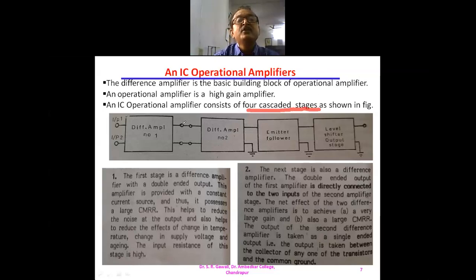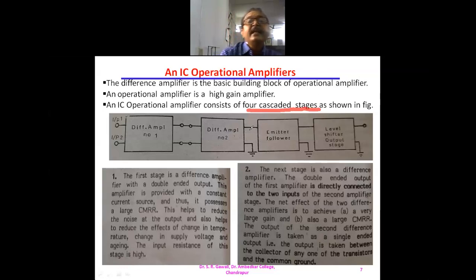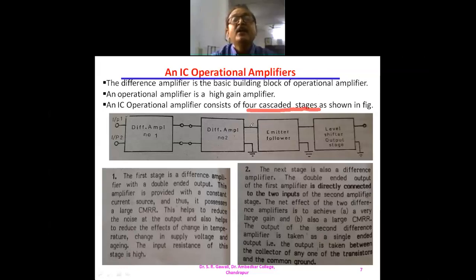OP1 is given to input terminal IP1 and OP2 is given to input terminal IP2 of the second difference amplifier. The output of the second difference amplifier is taken as single-ended — meaning the output is taken at output terminal A or B with respect to common ground. Out of these two, you can take any one output.